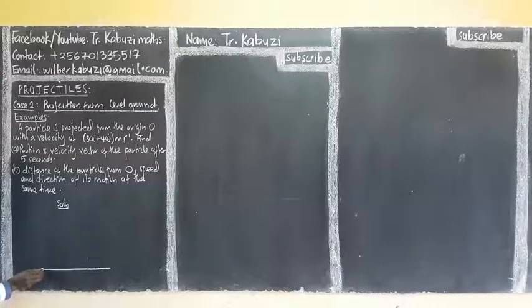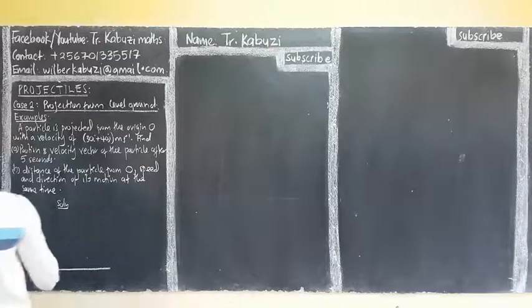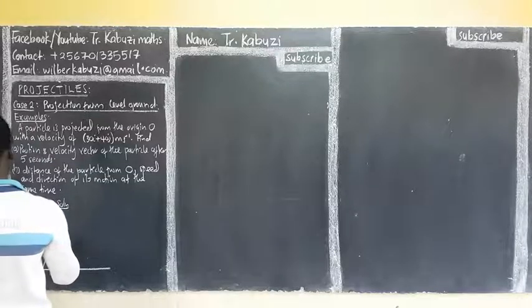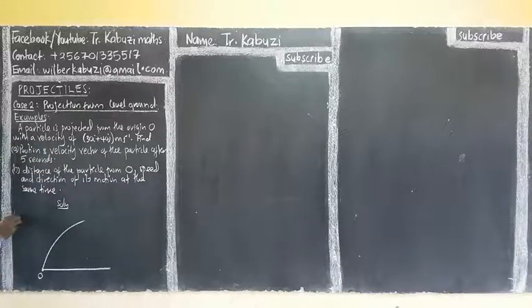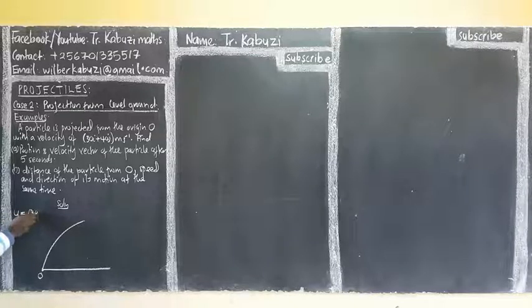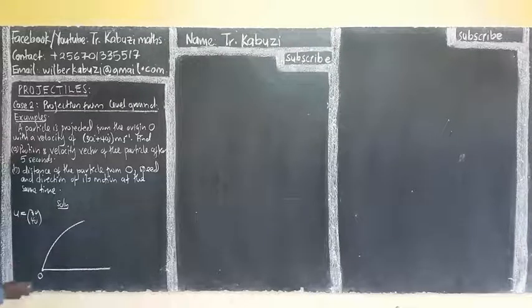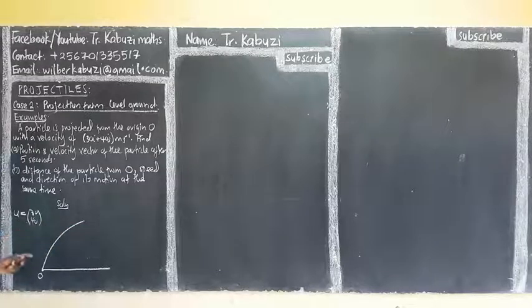We assume this is our point. Because they are giving us the velocity, it's going to be projected. Our u is given in terms of 30, then 40. It means that here you can also start by giving it in the horizontal. This one is positive and this one is negative also.